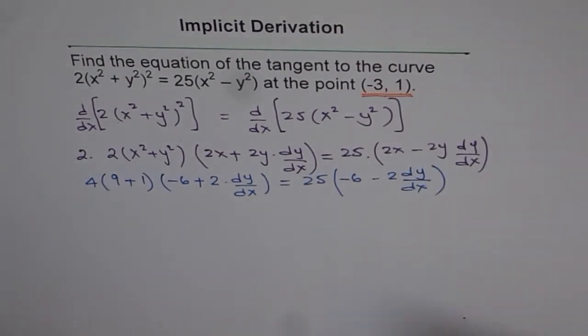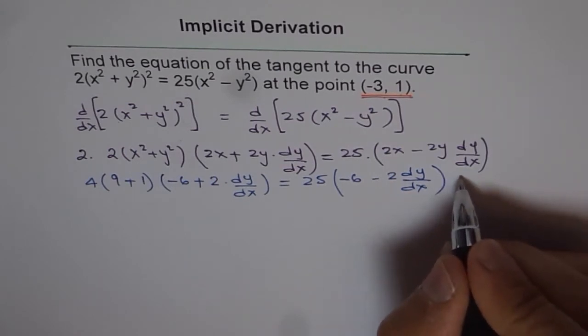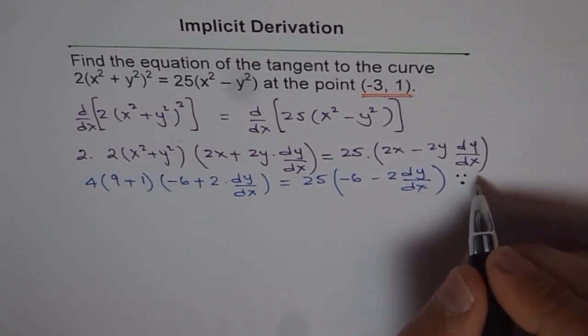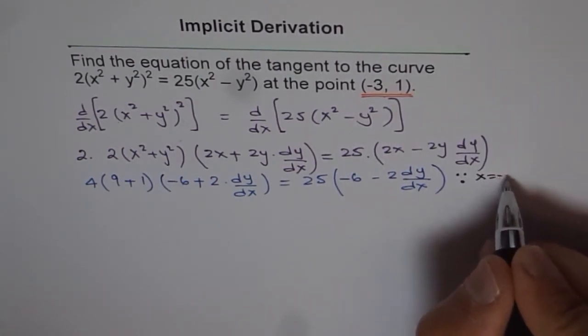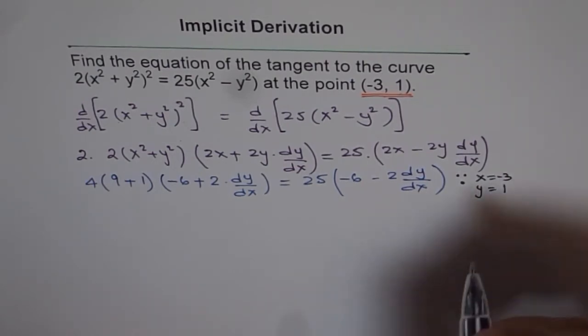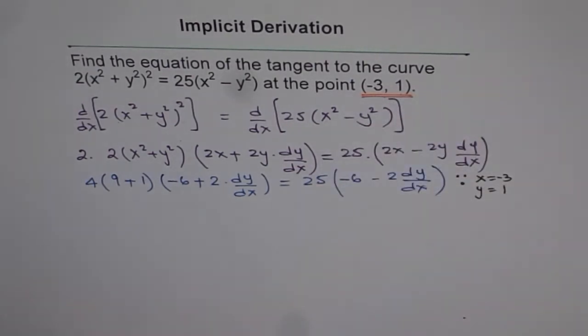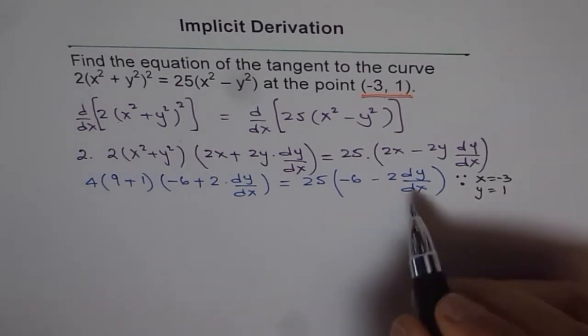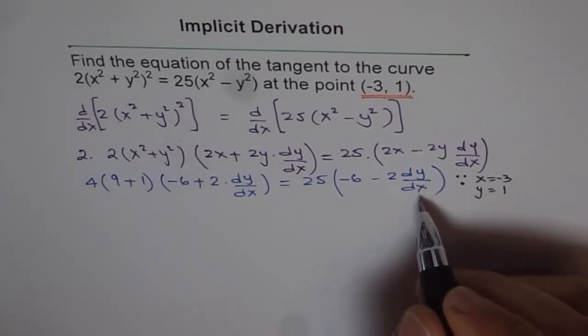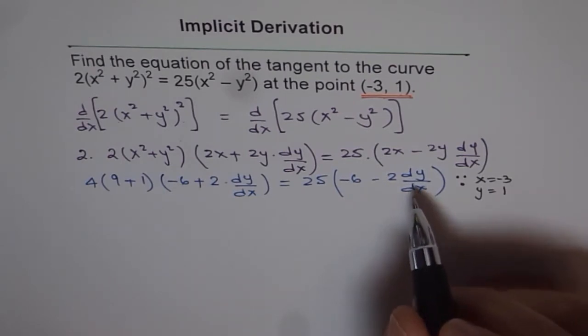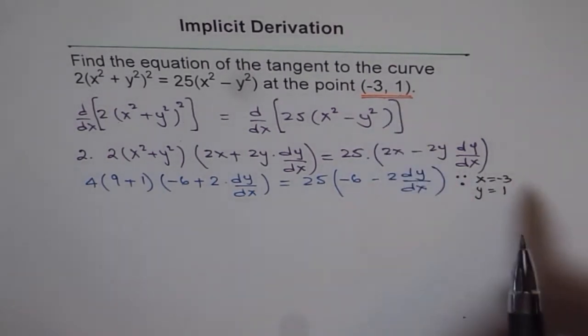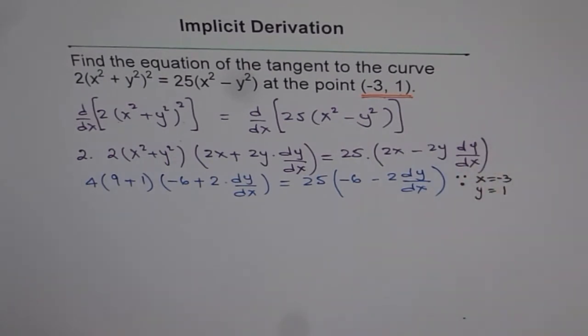So that is what we did. What we did here was, we said that x equals -3 and y equals 1, since the point is (-3, 1). So now dy/dx here is the slope of the tangent line at this point on the curve. This is what it is. And now we will continue.